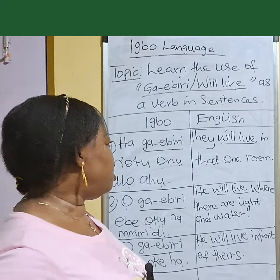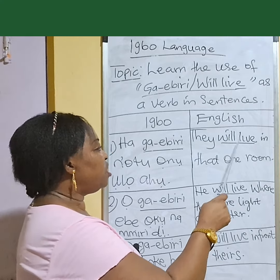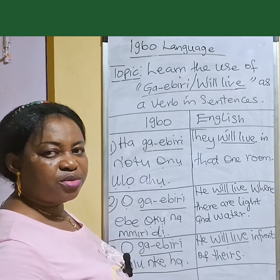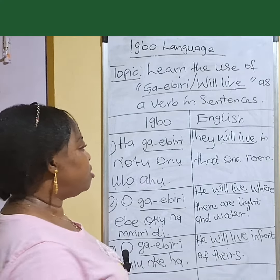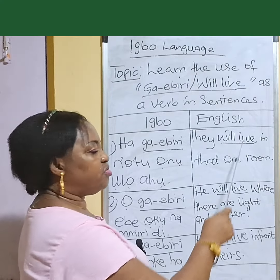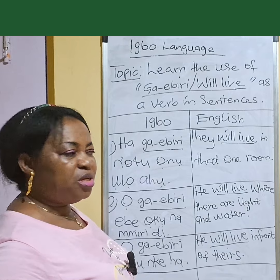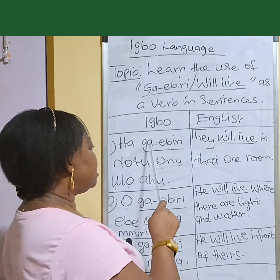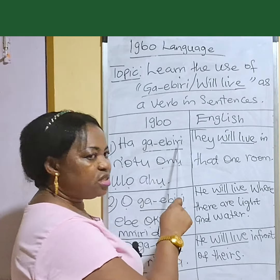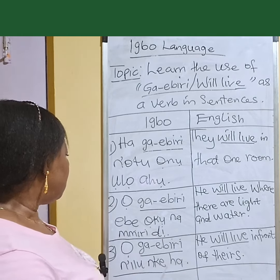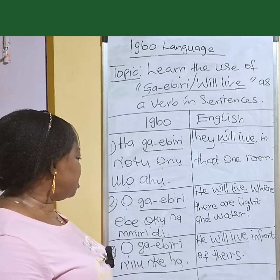Remember, 'we live' is a verb. 'We live' in Igbo means 'ga ebiri.'